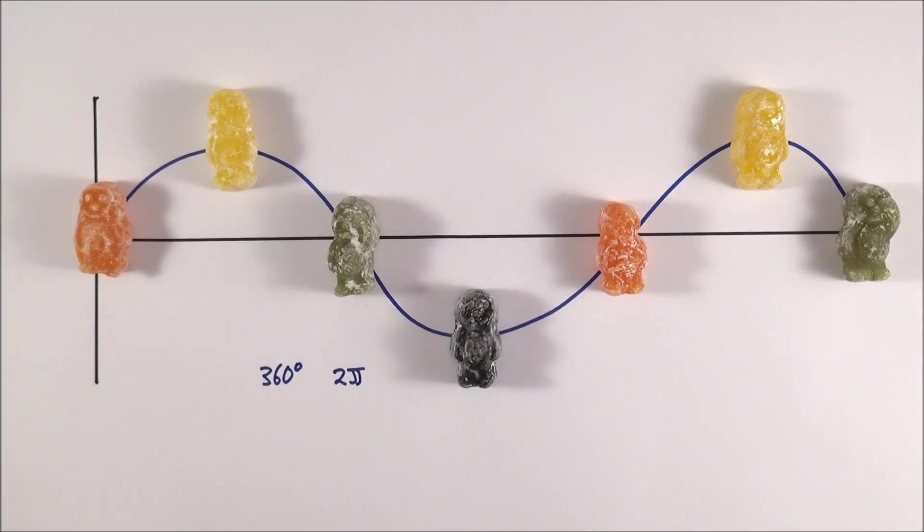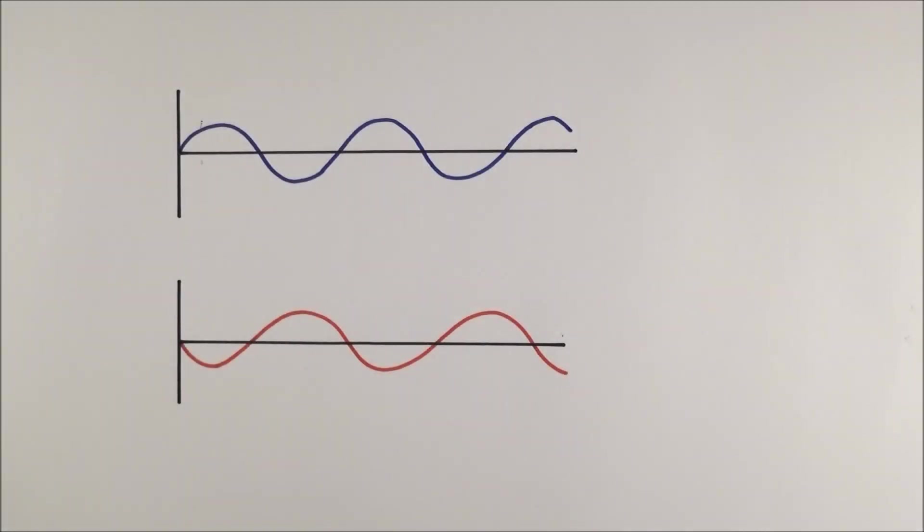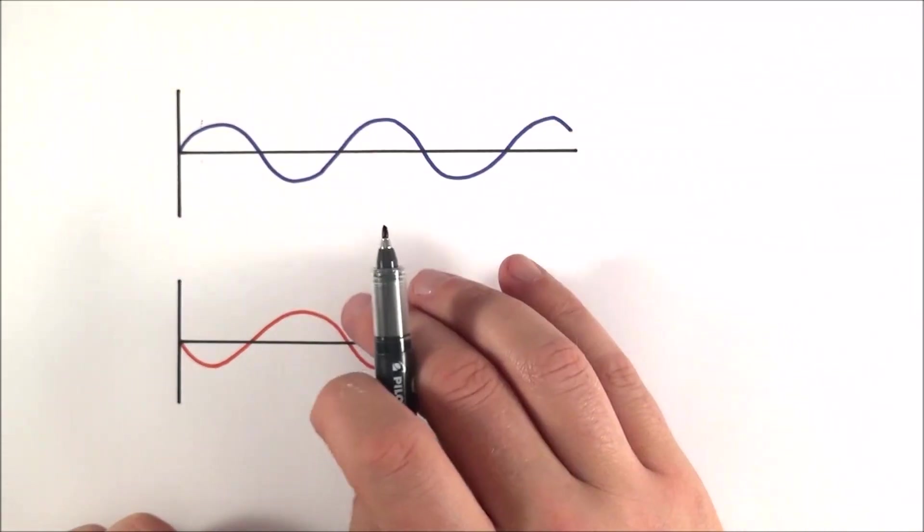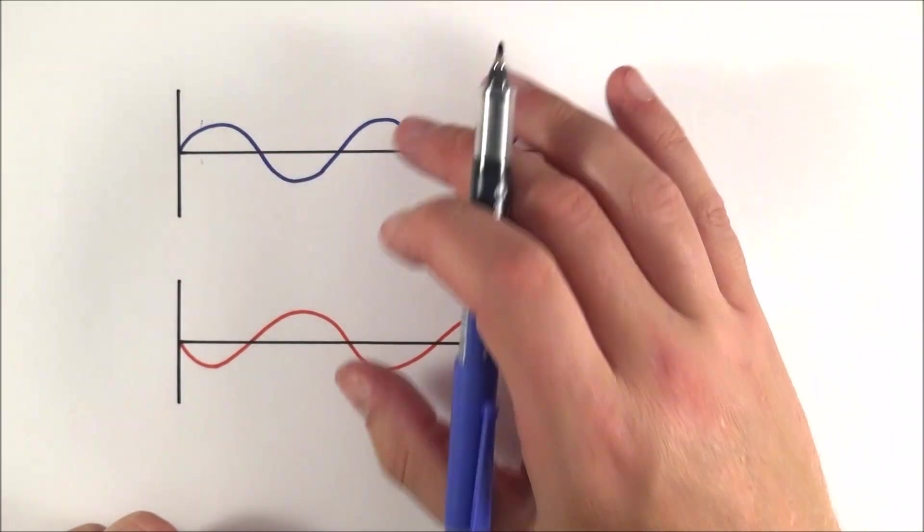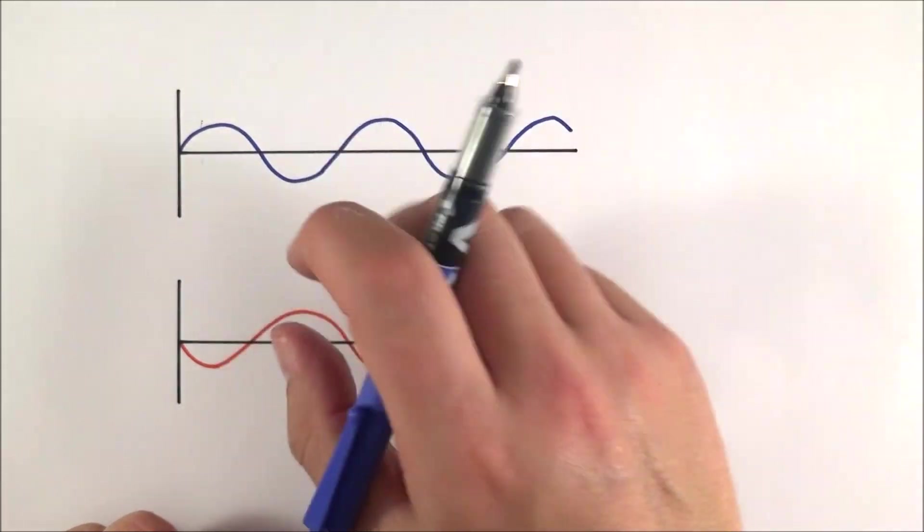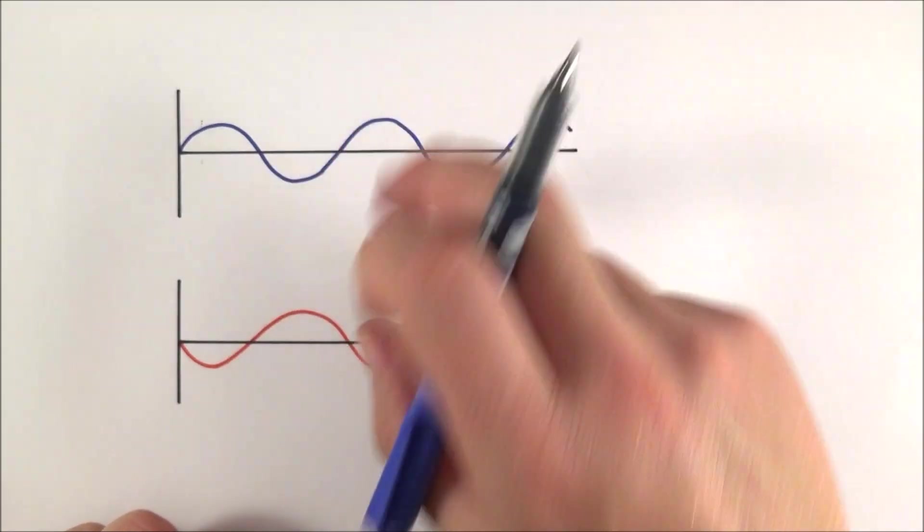We can also use phase difference to look at one wave compared to another. I've tried to draw these sort of freehand to be that they're coherent, which means there's a constant phase difference between them.